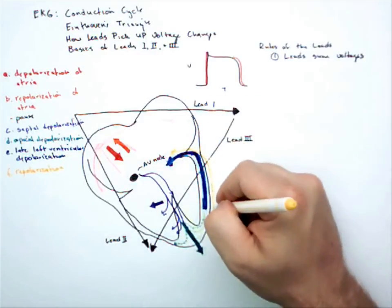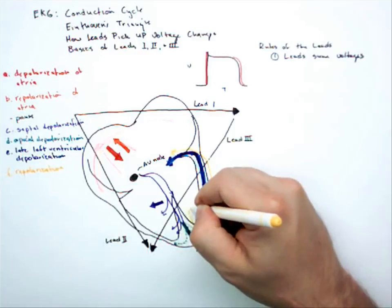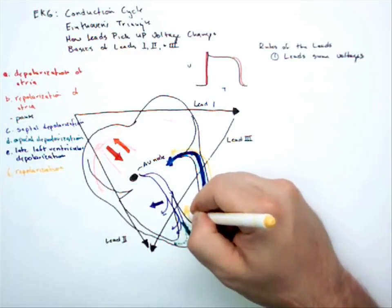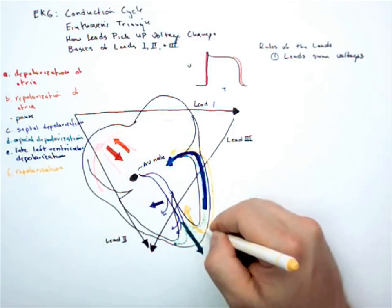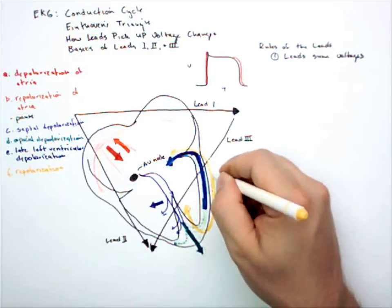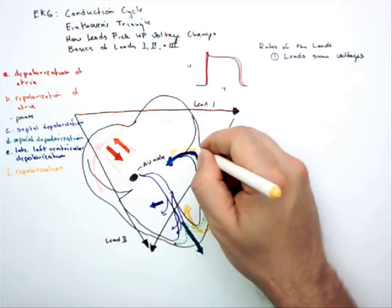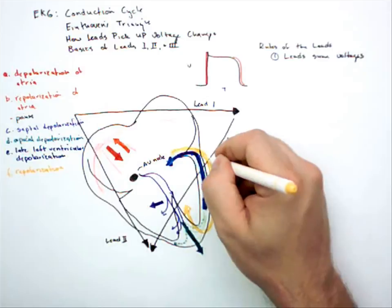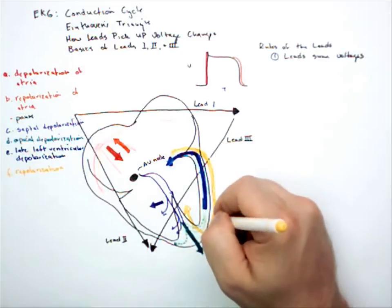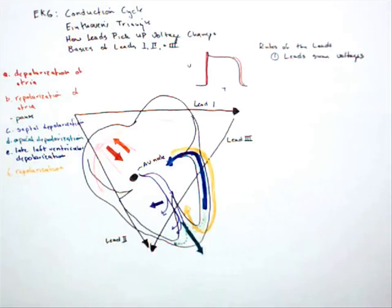Repolarization, again, does not occur until after depolarization is completed. So it's going to be a rather long path, and it's going to be rather circuitous. All right, so that's lead sum voltages.